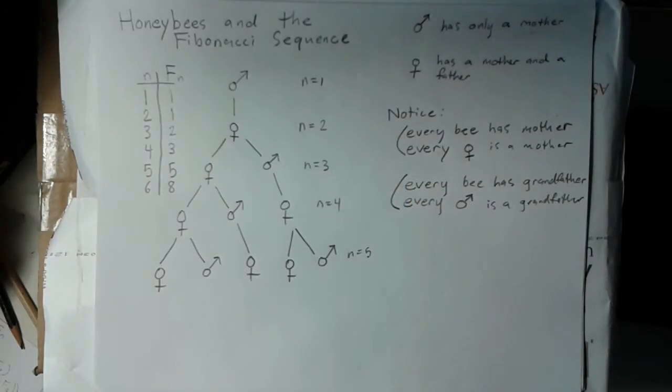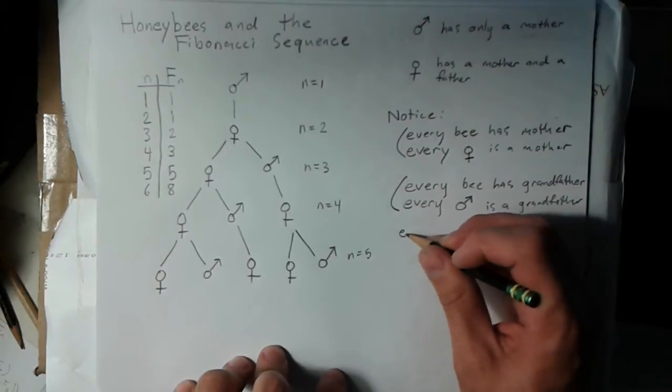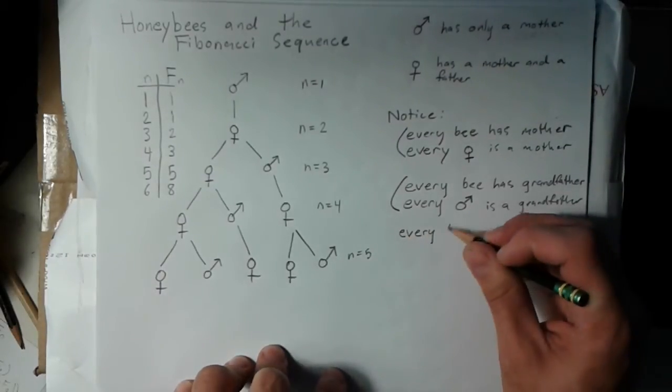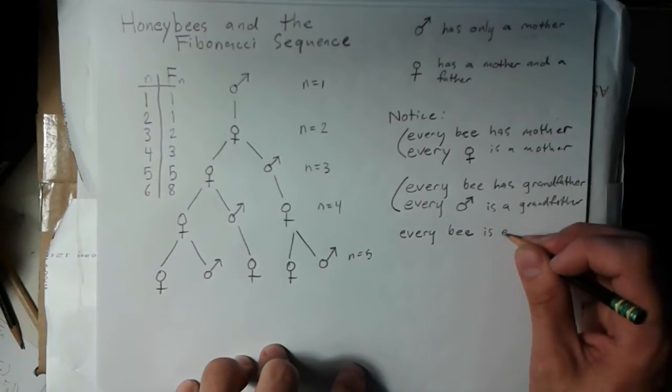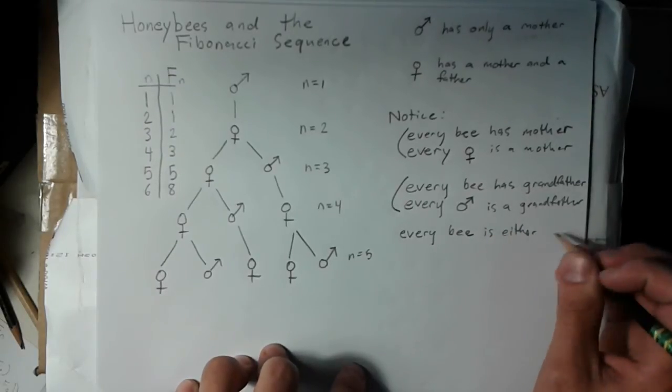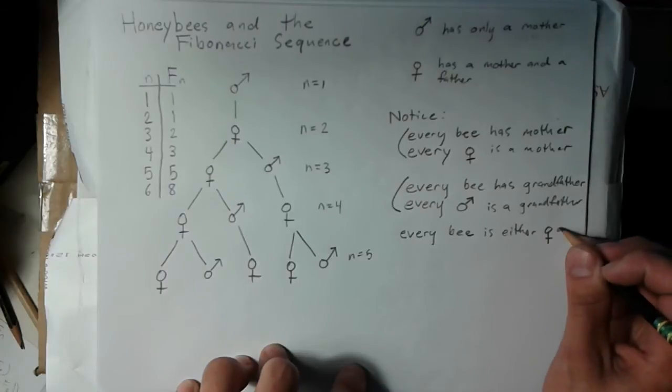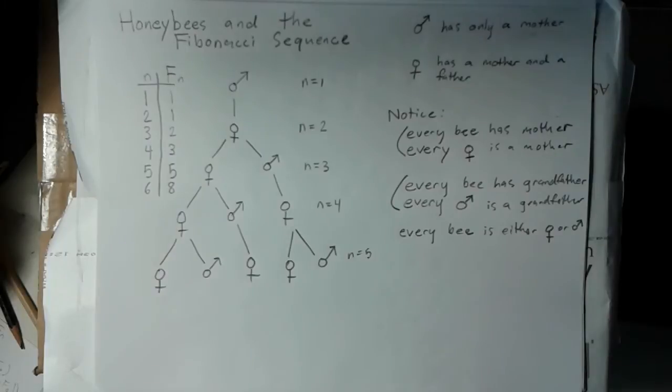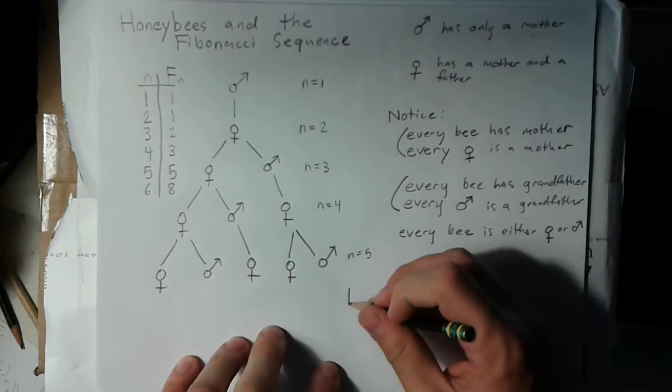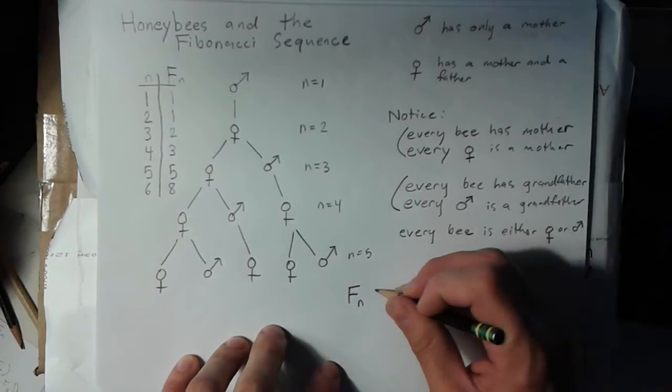The last piece of information, which is extremely obvious, is that every bee on the chart is either a queen or a drone. There's no worker bees here, in other words. So if we wanted to look at the number of bees in a given generation, in generation n...